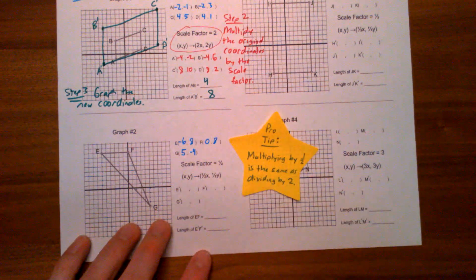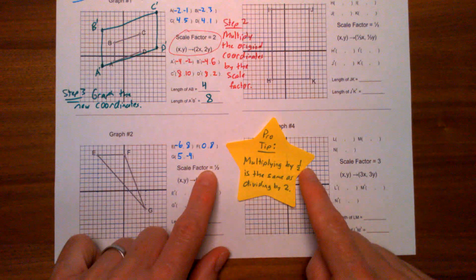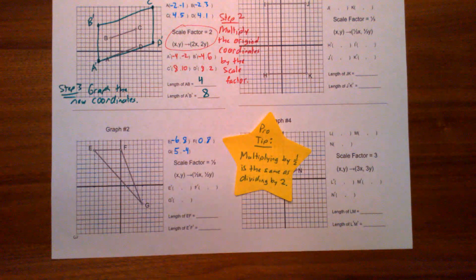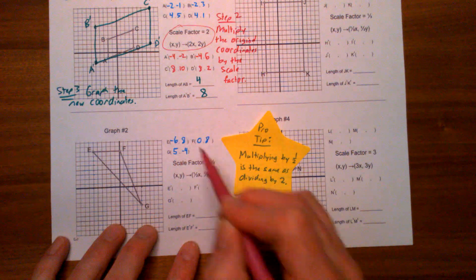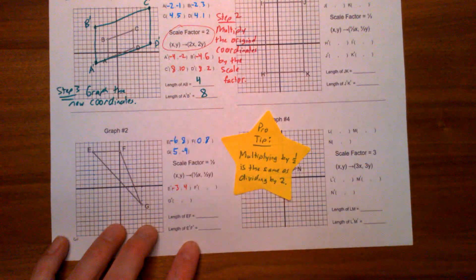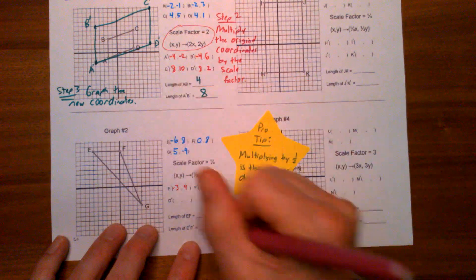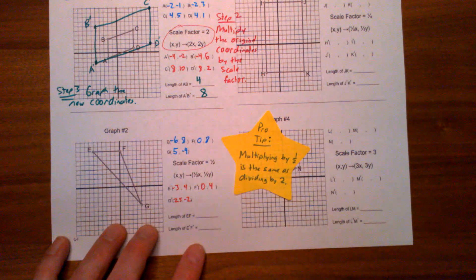Here's a pro tip: multiplying by one-half is the same as dividing by two, so we can take all these coordinates and just divide them by two. Negative six ÷ 2 = -3, eight ÷ 2 = 4, so E' is at (-3, 4). Zero ÷ 2 = 0, eight ÷ 2 = 4, so F' is at (0, 4). Five ÷ 2 = 2.5, negative four ÷ 2 = -2, so G' is at (2.5, -2).